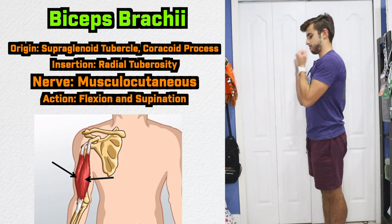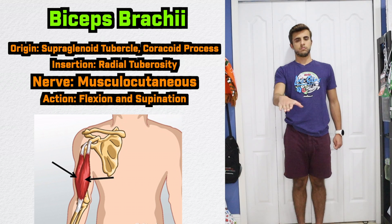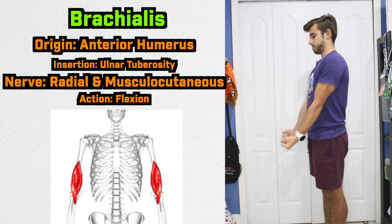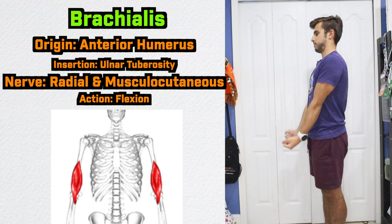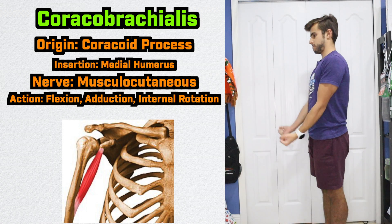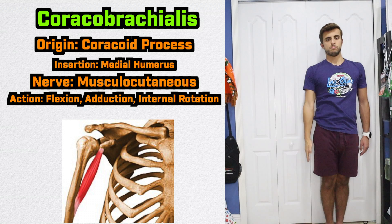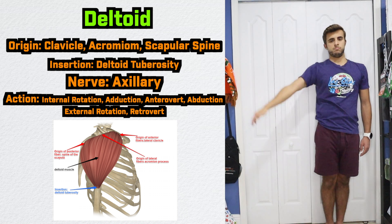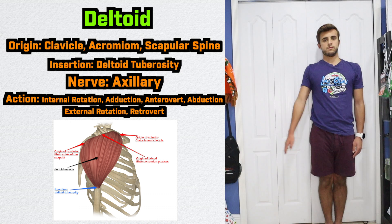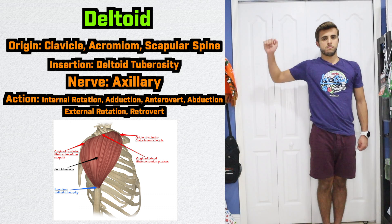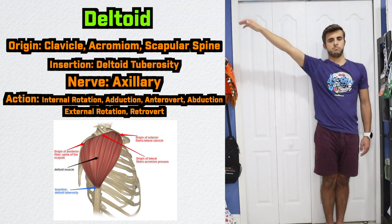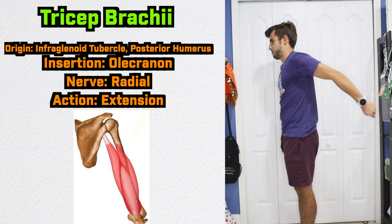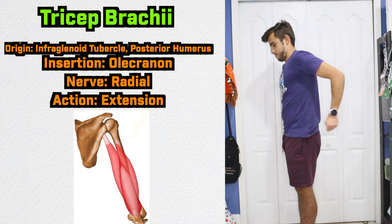The next muscle group are the muscles of the upper arm. Let's start off with the biceps brachii, which is responsible for flexion and supination. A very deep muscle and one of the strongest flexors is the brachialis. Next, we have the coracobrachialis, which is responsible for flexion, adduction, and internal rotation. Then we have the deltoid, which has three heads: the anterior head is responsible for internal rotation, adduction, and anteversion; the lateral head for abduction; and the posterior head for external rotation, adduction, and retroversion. Lastly, we have the triceps brachii, which is responsible for extension.